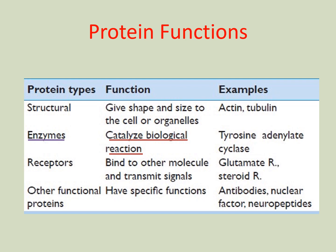Proteins are a major effector of function in biological systems — they are the doers. Certainly structural: our cytoskeleton is made up of protein polymers like actin and tubulin. Keratin is what's in your hair and fingernails. Many proteins are enzymes — they facilitate chemical reactions, making biochemical reactions possible at homeostatic temperatures.